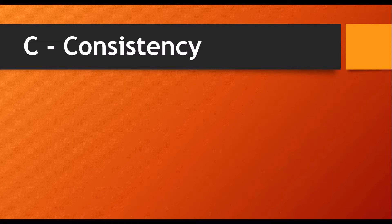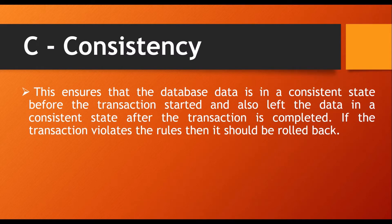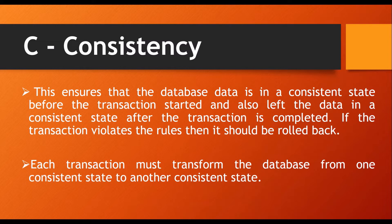Our second property is consistency. This ensures the database is in a consistent state before the transaction starts and after the transaction completes successfully. Whatever happens in the middle of a transaction, it should not leave the database in a half-completed state. If there is a transaction error, the changes already made will be rolled back to restore the database to its previous consistent state.